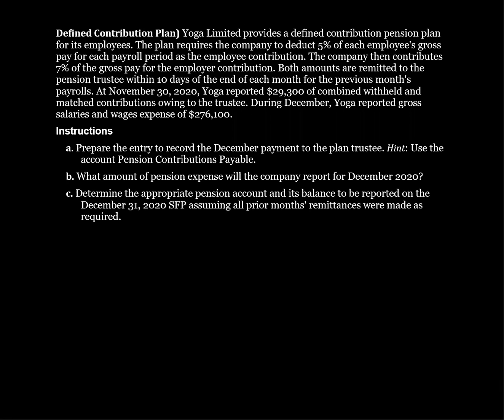This question will walk through the accounting for a defined contribution pension plan. Yoga Limited provides a defined contribution pension plan for its employees. The plan requires the company to deduct 5% of each employee's gross pay for each payroll period as the employee contribution. The company then contributes 7% of the gross pay as the employer contribution.